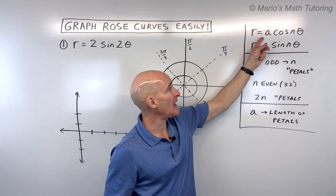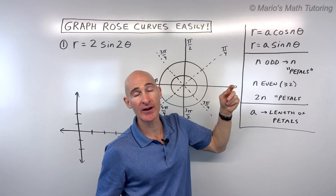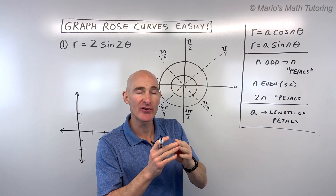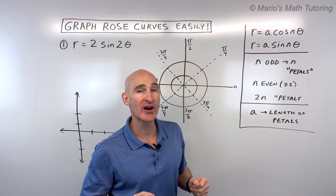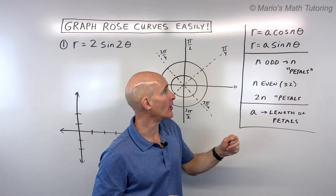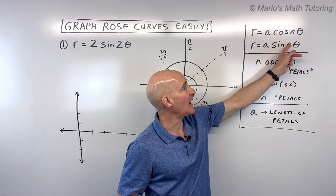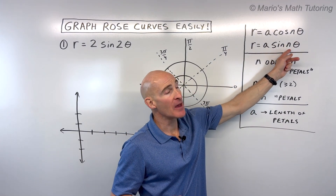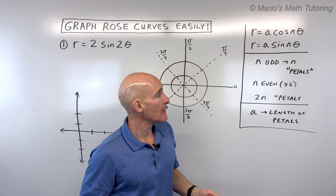The coefficient a that comes in front of the cosine or sine will tell you how long the petals of the flower are, and the number n that comes in front of the angle theta will tell you how many petals you have.